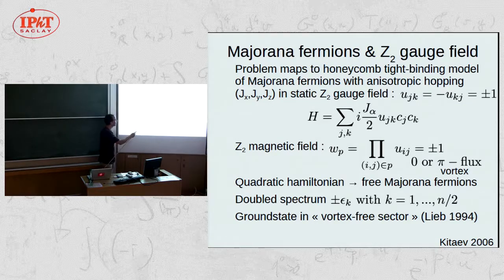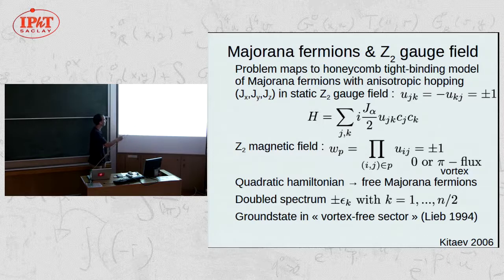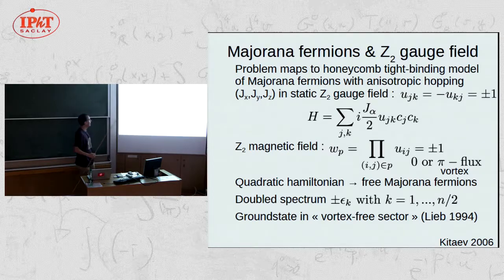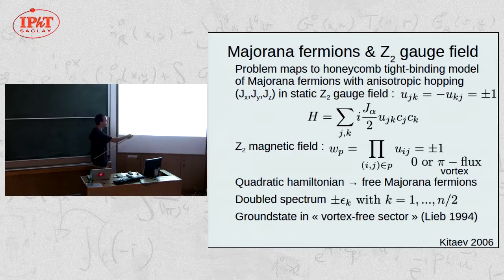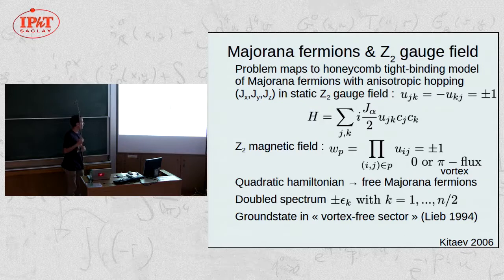The U's commute with the Hamiltonian and are conserved, so they can be treated as numbers. The only remaining operators are the Majorana operators C_j and C_k, giving a tight-binding Hamiltonian where the hopping amplitude involves these quantities. The Z2 gauge field defines a magnetic flux in each plaquette — the product of U's around a hexagon, either +1 (no flux) or -1 (pi flux or vortex). This yields a quadratic, non-interacting Majorana Hamiltonian that can be solved exactly.